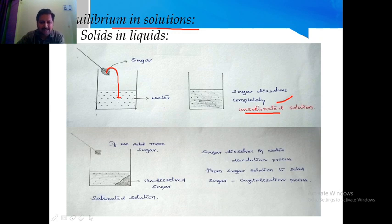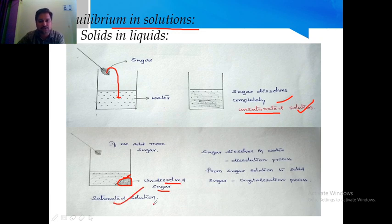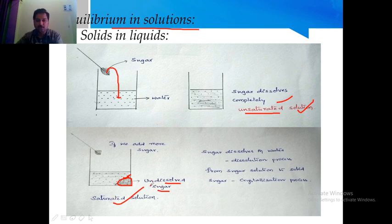An unsaturated solution is one where the solvent still has the capacity to dissolve more substance. If we keep adding sugar continuously — 5 spoons, 6 spoons, 10 spoons — a stage is finally reached where water can no longer dissolve any more sugar. Some sugar deposits at the bottom of the beaker as undissolved sugar, and such a solution is called a saturated solution. In a saturated solution, we observe two processes: dissolution (forward) and crystallization (backward).